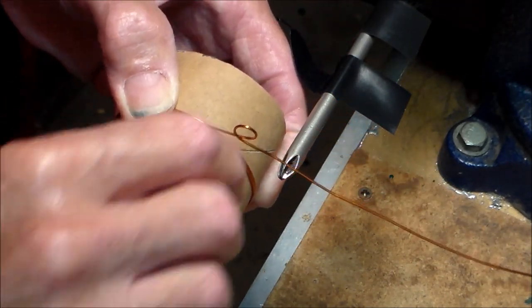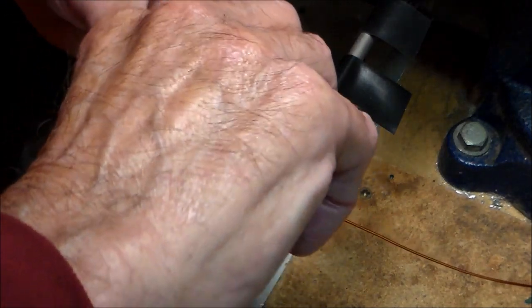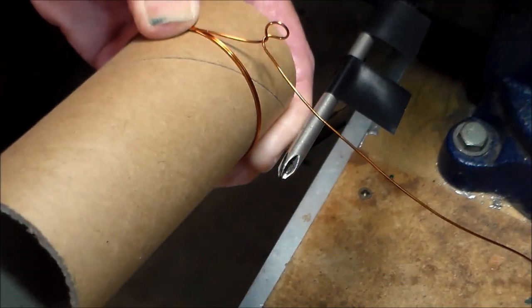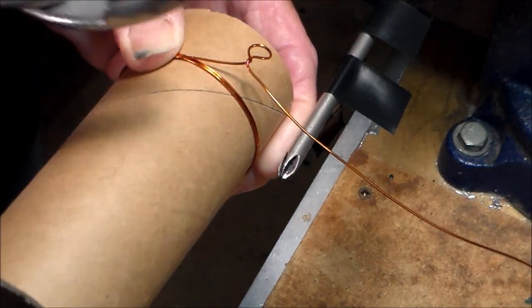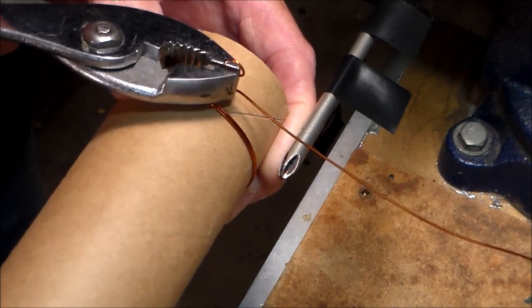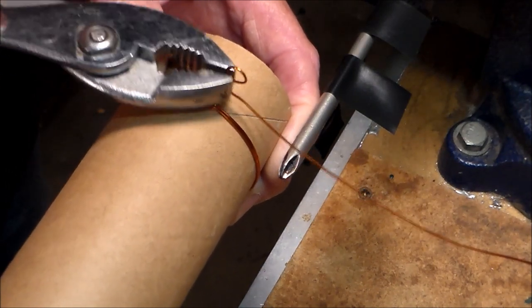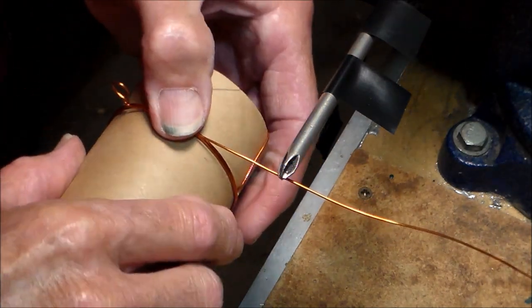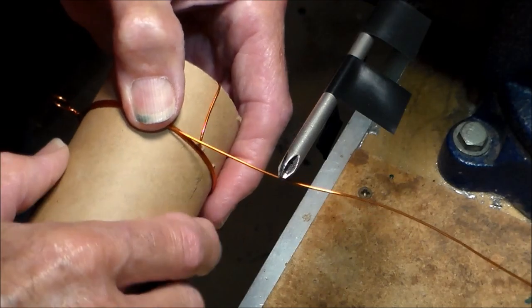The next step is to grab the loop firmly between thumb and forefinger. Give it one half turn clockwise. One half turn is all you need. Then take your regular slip joint pliers and squeeze the twist as tightly as possible to make it flat. Then you simply continue winding and counting your turns.